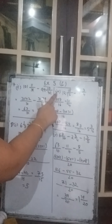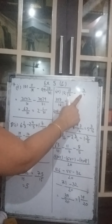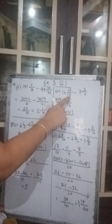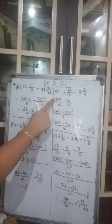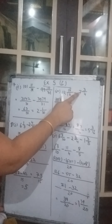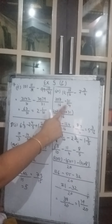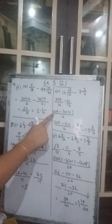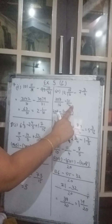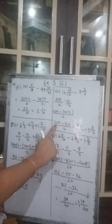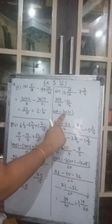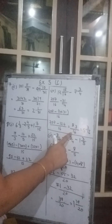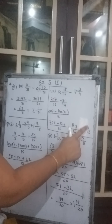Now the 4th part: 12 whole 15 upon 16 minus 7 whole 3 upon 4. Convert to improper fractions: 16 multiplied by 12 plus 15 gives 207 upon 16, minus 4 multiplied by 7 plus 3 gives 31 upon 4. LCM is 16. When LCM and denominator are the same the numerator comes as it is: 207 minus 16 divided by 4 gives 4, multiplied by 31. So it is 207 minus 124 upon 16, giving 83 upon 16. Convert to mixed fraction: 5 whole 3 upon 16.